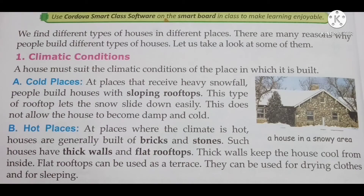We find different types of houses in different places. हमें अलग अलग जगह पर अलग अलग तरह के घर देखने को मिलते हैं — जैसे कहीं मिट्टी से बने घर, कहीं लकड़ी से बने घर, या कहीं बर्फ से बने घर। There are many reasons why people build different types of houses. अब हम one by one देखेंगे कि ऐसे कौन से reasons हैं जिनकी वजह से लोग अलग अलग तरह के घर बनाते हैं।